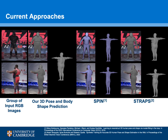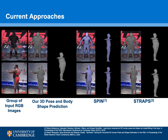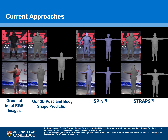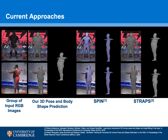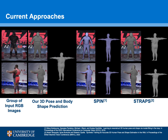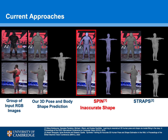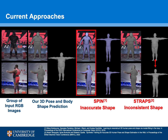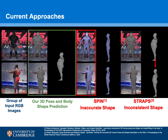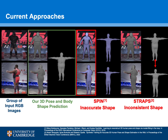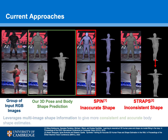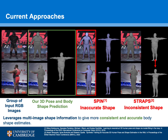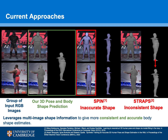While many current approaches to human mesh recovery provide impressive pose estimates, body shape predictions tend to be inaccurate or inconsistent. Our method aims to predict consistent and accurate body shapes by leveraging the visual shape information present in multiple unconstrained images of a subject.